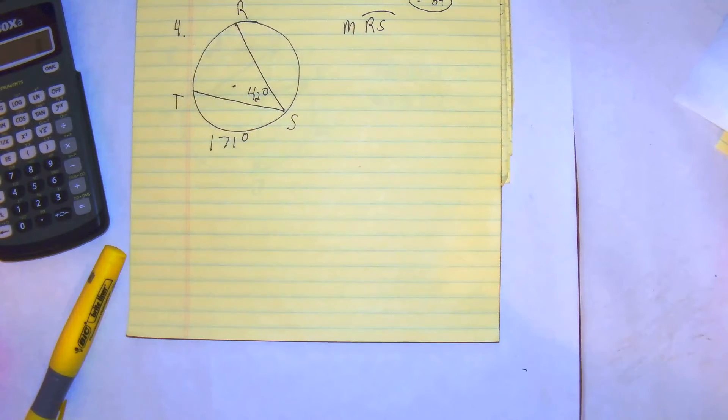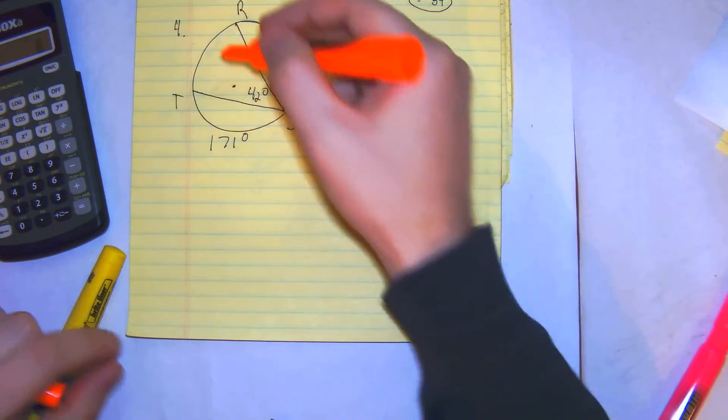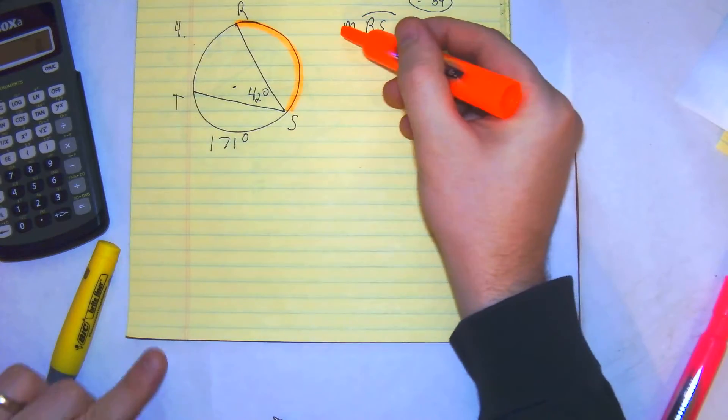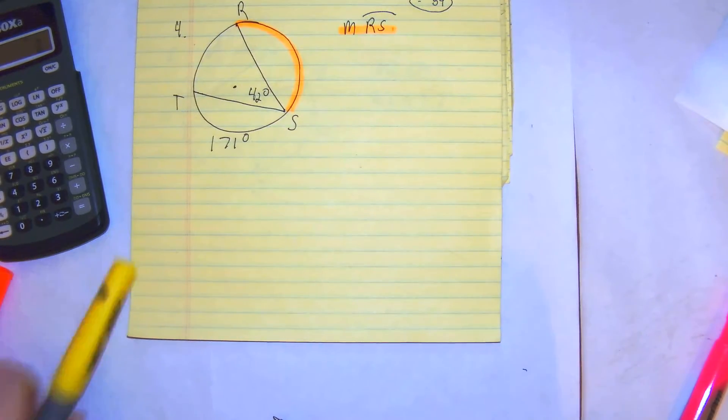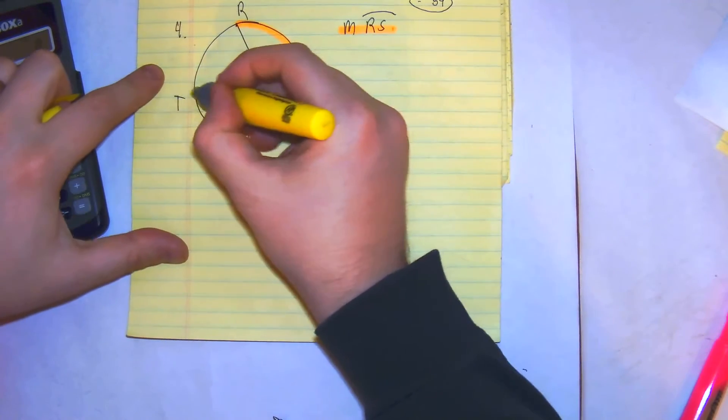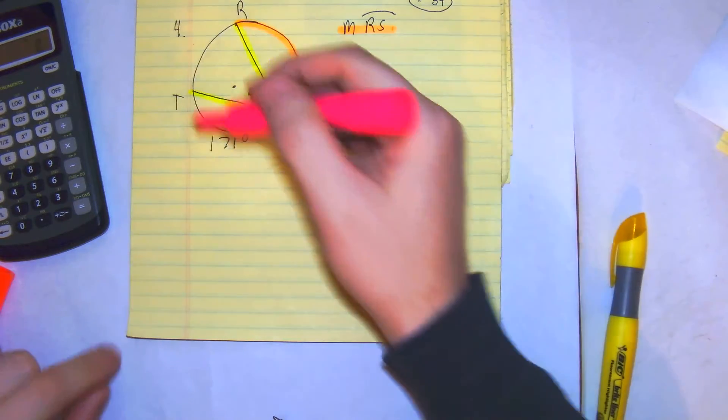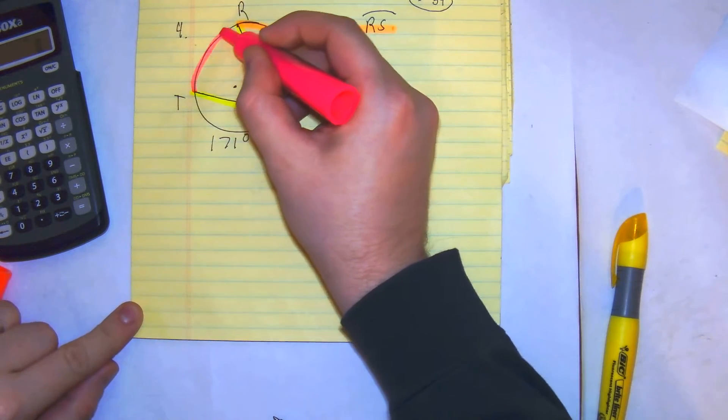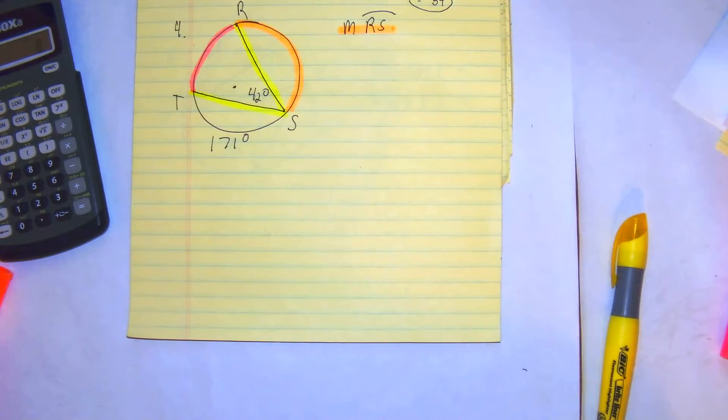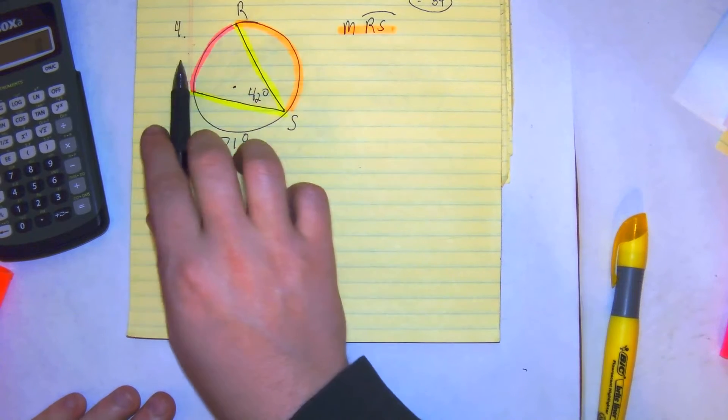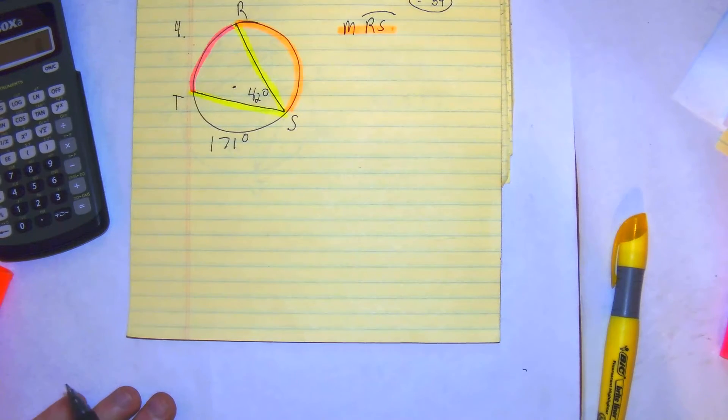Number four. Number four wants us to find rs. They want us to find rs. That's our goal. They want the measurement of rs. What we know here is we have the intercepted, or we have the inscribed angle. And we have the intercepted arc. So first we're going to use this relationship to get that. Because we know this, we need to find this. We need two thirds of the circle to find the other missing half.